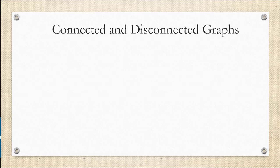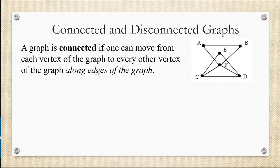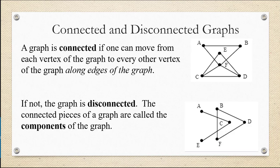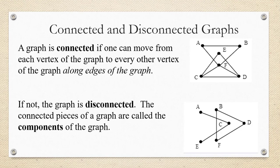To understand what Euler said, we first need to remember the definition of a connected graph. A graph is connected if one can move from each vertex of the graph to every other vertex of the graph along the edges of the graph. If not, the graph is disconnected, and the connected pieces of the graph are called components.